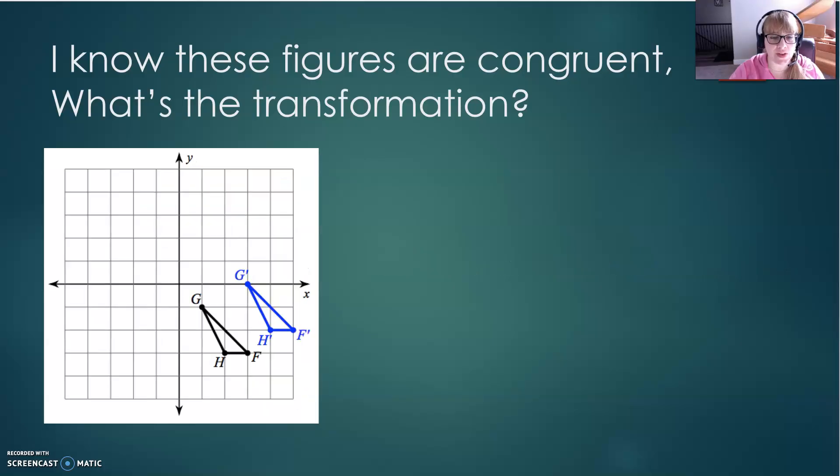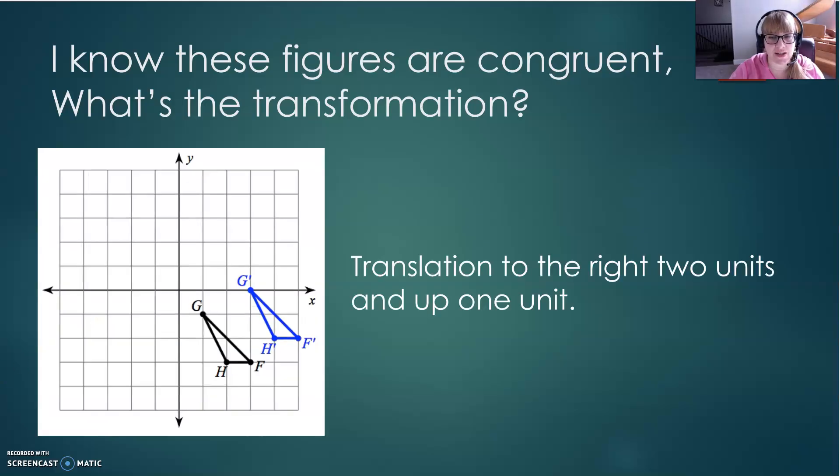And finally, I know that these two figures are congruent. So what is the transformation? How can I get from GHF to G' H' F'? This one's the easiest one of all. You can see that it's a translation. I translated it two units to the right and one unit up.